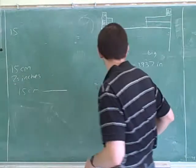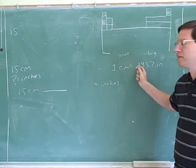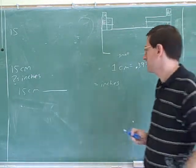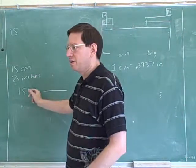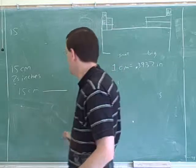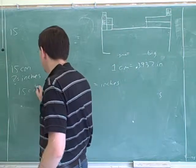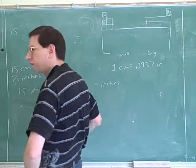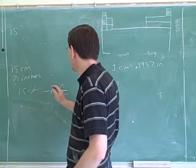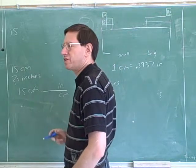So, let's review that method. You found this equivalency. This is a good equivalency between centimeters and inches. Then we write down our starting units, we write down our target units. You knew that you had to put centimeters down here to cancel, you put inches up here. Good. Now, what number should you put on the top of the fraction?